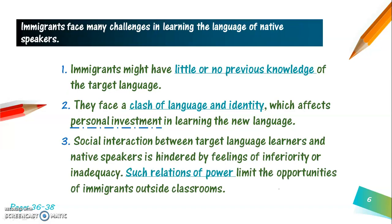Third, social interaction between immigrants — that is, the target language learners — and the native speakers could be hindered, or affected negatively, by feelings of inferiority or inadequacy. Because they do not speak the dominant language of the host country, they feel unable to communicate with native speakers. This makes them feel less powerful and less important, and they might find it hard to fit in in the society in which they live. This can happen with teenagers, adults, or older people.